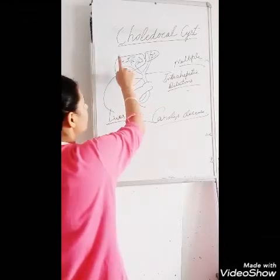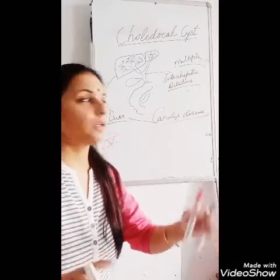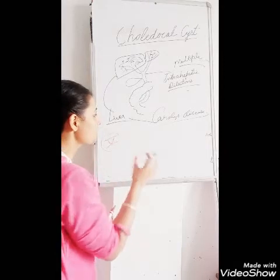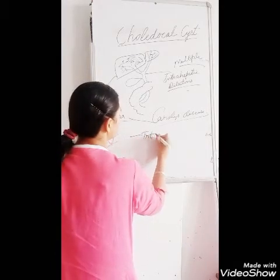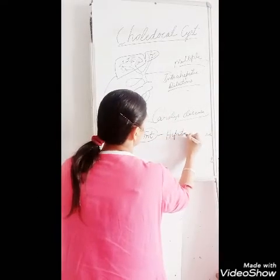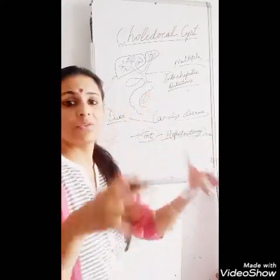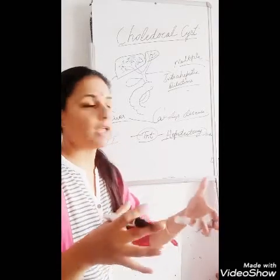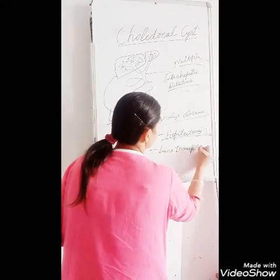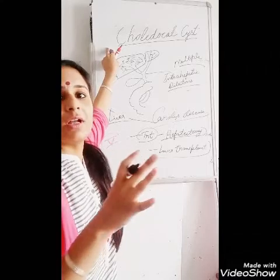In Caroli's disease, because there is intra-hepatic dilatation, we will remove the multiple cysts, but it is not easy to remove each and every cyst present in the liver. So we will remove some part of the liver - that is known as hepatectomy. And if the whole liver is filled with multiple cysts and multiple dilatations of the intra-hepatic ducts, then we will do a liver transplant. The treatment is different for each type of choledochal cyst.